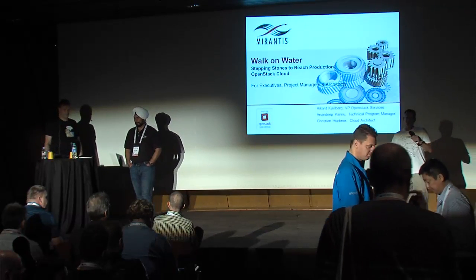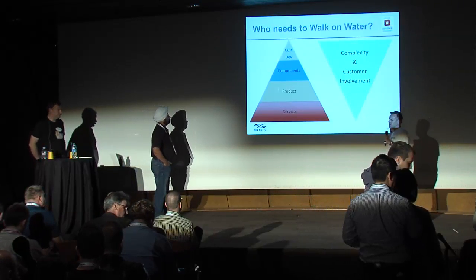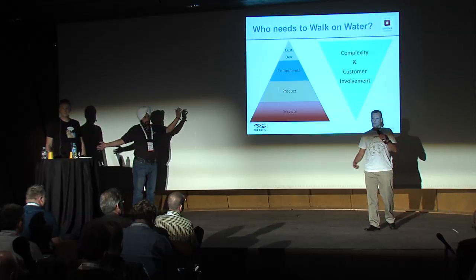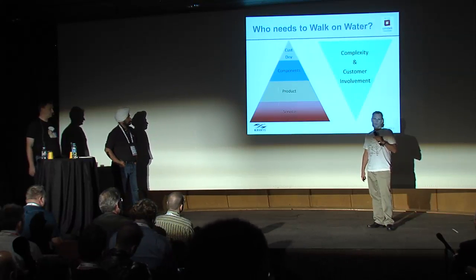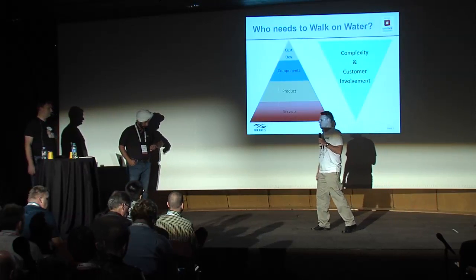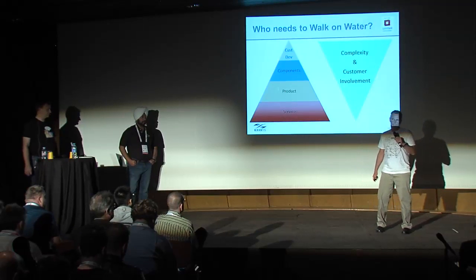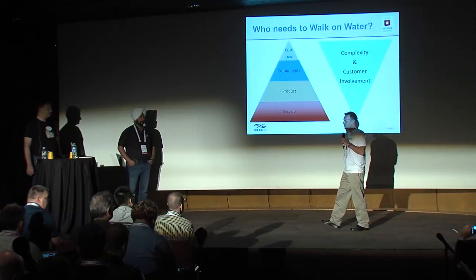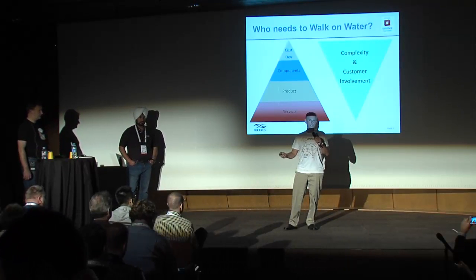We're here to talk about cloud projects and how they go. When we look at the customers we work with, we try to put them into this pyramid. At the bottom are companies primarily looking for services — EC2, Rackspace, or Mirantis OpenStack Express. Moving up are companies looking for a product, a black box to drop in and integrate with support systems. Further up are companies into open source who pick components but like staying close to trunk. At the top are true custom developers with large development organizations who build their own solution — what we call a Frankenstack.